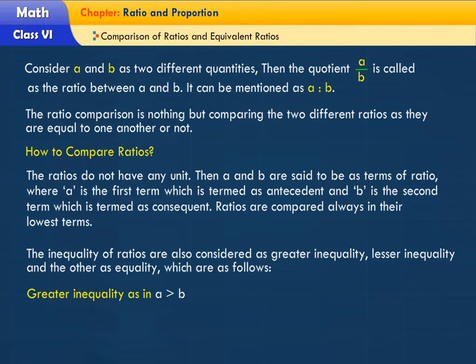Greater inequality as in A is greater than B. Lesser inequality as in A is less than B.